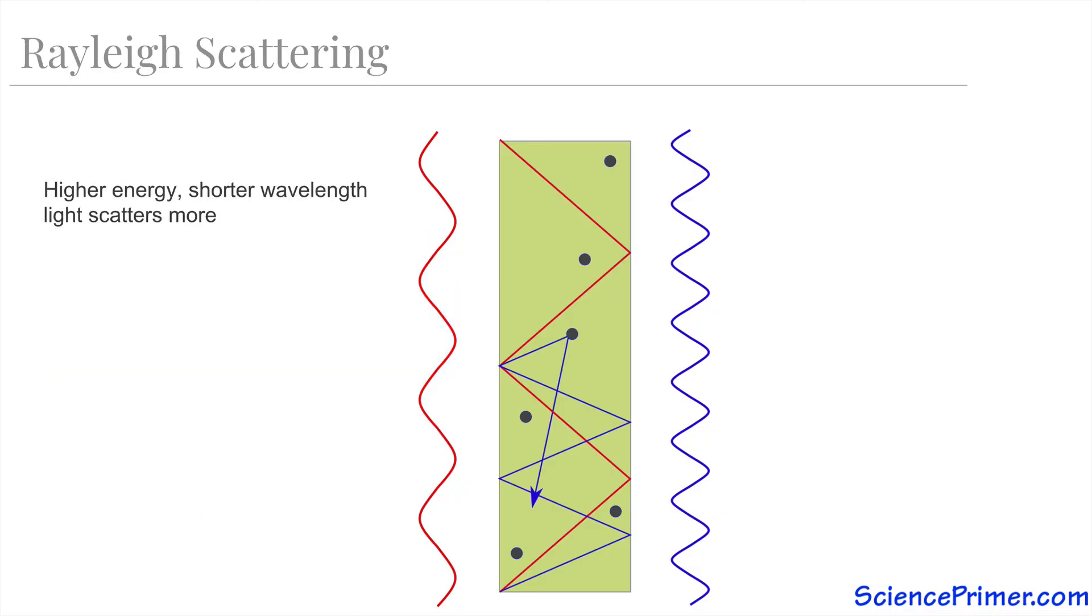So the tendency for higher energy, shorter wavelength, bluer light to be scattered explains both why the sky is blue and why sunsets are red.